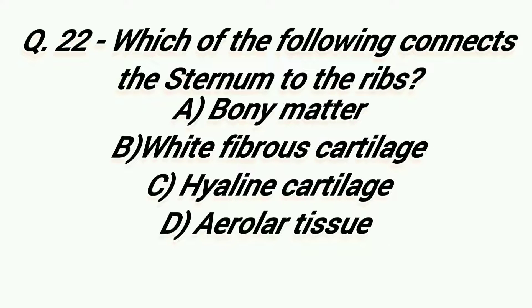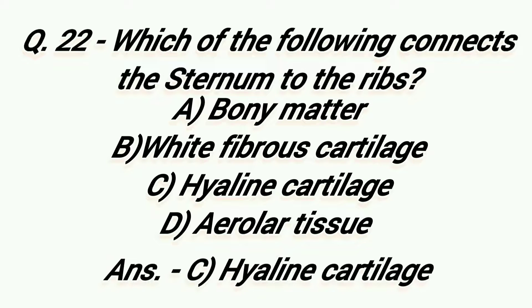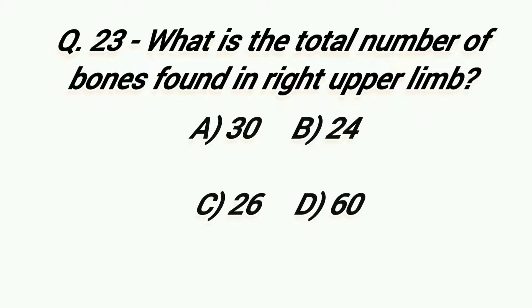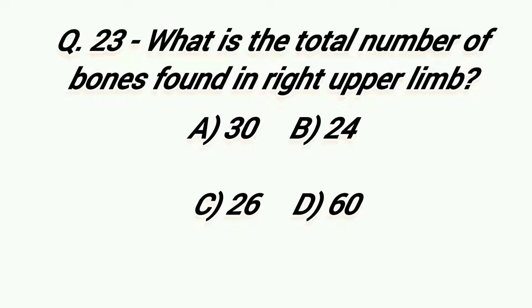Which of the following connects the sternum to the ribs? Option A: Bonimeter, Option B: White Fibrous Cartilage, Option C: Hyaline Cartilage, Option D: Areolar Tissue. Right answer is Option C, Hyaline Cartilage. What is the total number of bones found in the right upper limb? Option A: 30, Option B: 24, Option C: 26, Option D: 60. Right answer is Option A, 30.